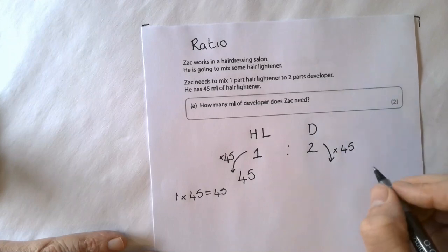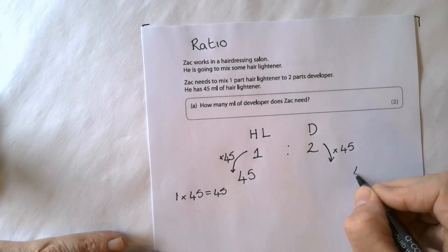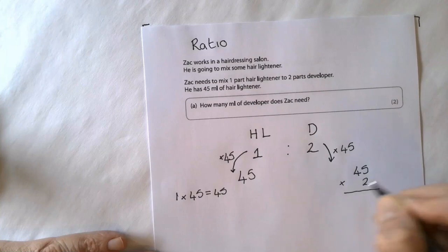Depending on which way you do multiplication, whether it's the grid method or the tower method, in this case I'm going to do 45 multiplied by 2.